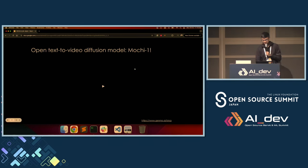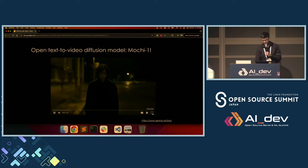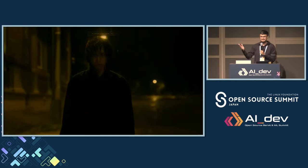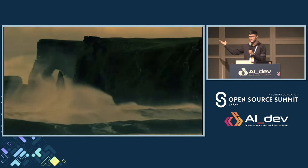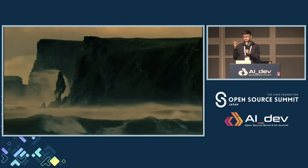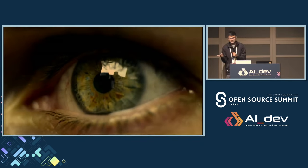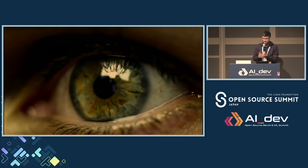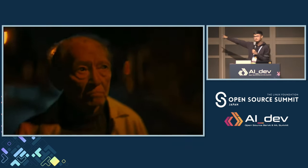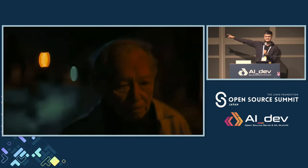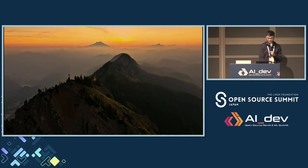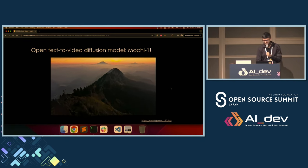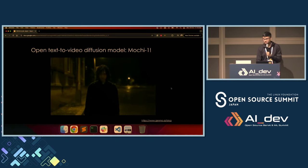And then we have Mochi, which was released like three or four days back. It's an open model, unlike Sora — Sora is a closed model. We can't even access Sora; it was only released to a couple of beta testers. But Mochi is an open video generation model, and we can see the quality. So we've come a long way. Technology can advance, and I think it's pretty remarkable.